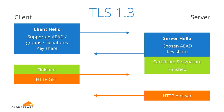Here's how a TLS 1.3 handshake looks. TLS 1.3 removes a round trip by predicting what key agreement algorithm the server will use, and sending preemptively a key share for that algorithm. So with the first flight, we have the client hello, the supported parameters, and a key share for the one the client thinks the server will like.